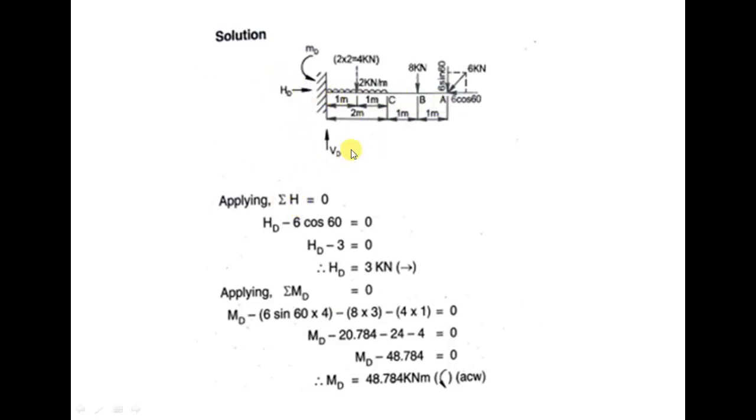So the horizontal summation is 0. So H_D, in the same way, 6 cos theta. It is positive direction, I am going to the left side or right side, so positive. 6 cos theta is negative direction. So H_D minus 6 cos theta is equal to zero. So if you see, 6 cos theta, H_D is equal to 3 kilonewton.